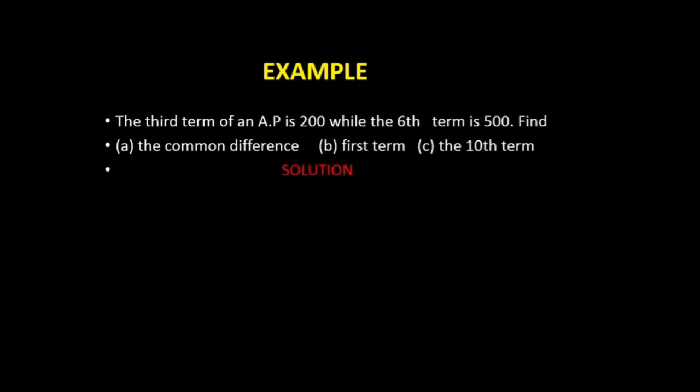Now let's look at the solution. Before we proceed, let's look at the nth term of an AP. The nth term of an AP is given by Tₙ = a + (n - 1)d, where a is the first term, n is the number of terms in the progression, and d is the common difference.